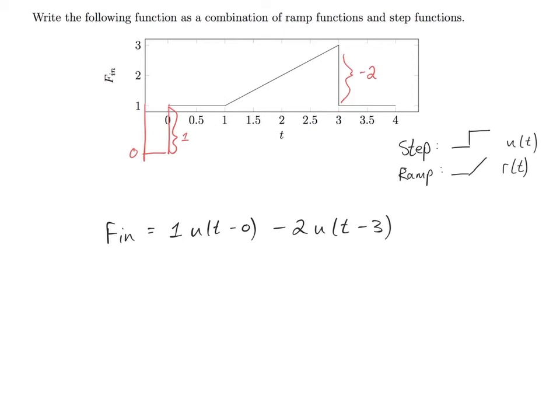The first ramp explains a change in slope from zero to this slope over here, which is two units over two units, meaning it is a slope of one.